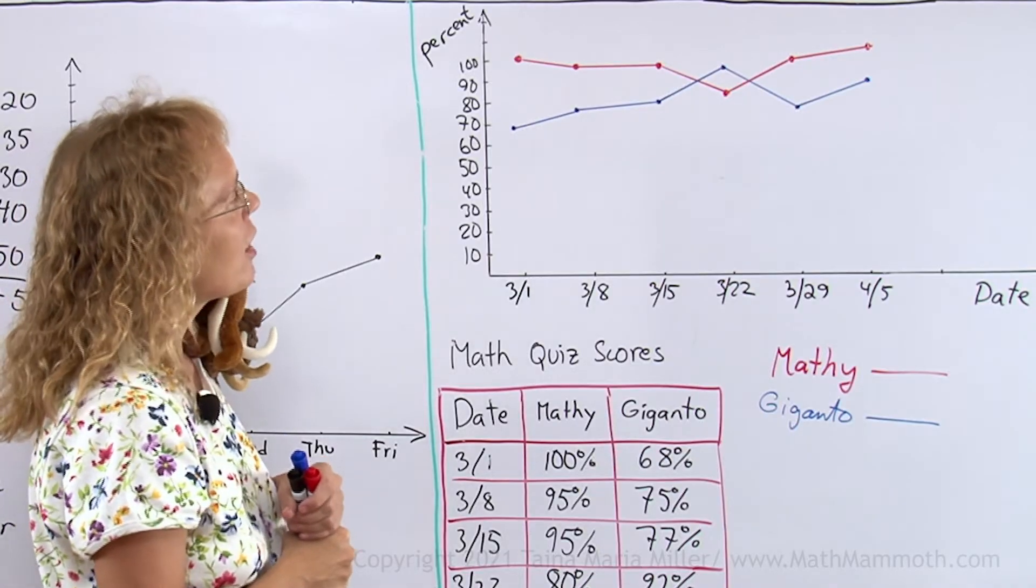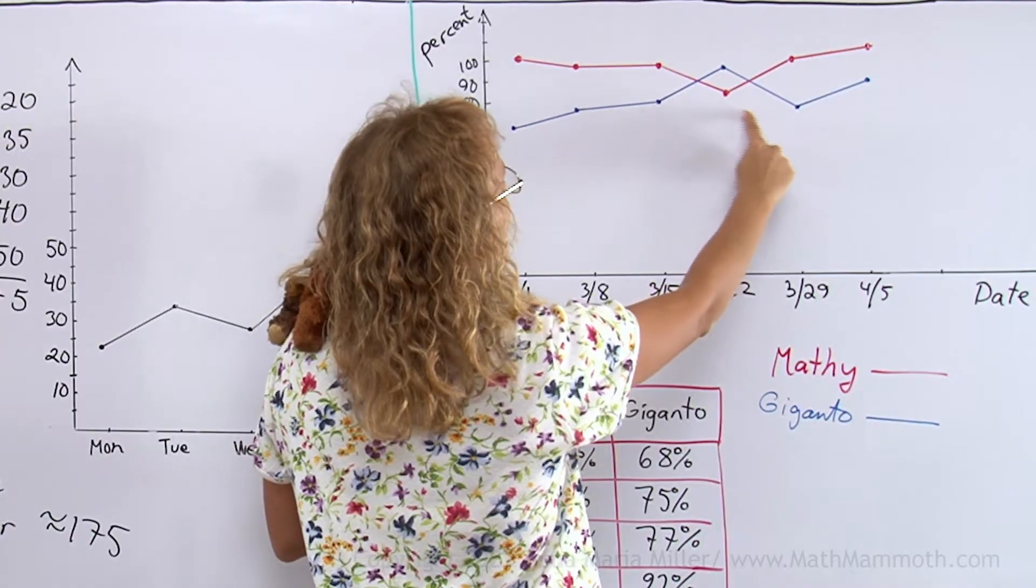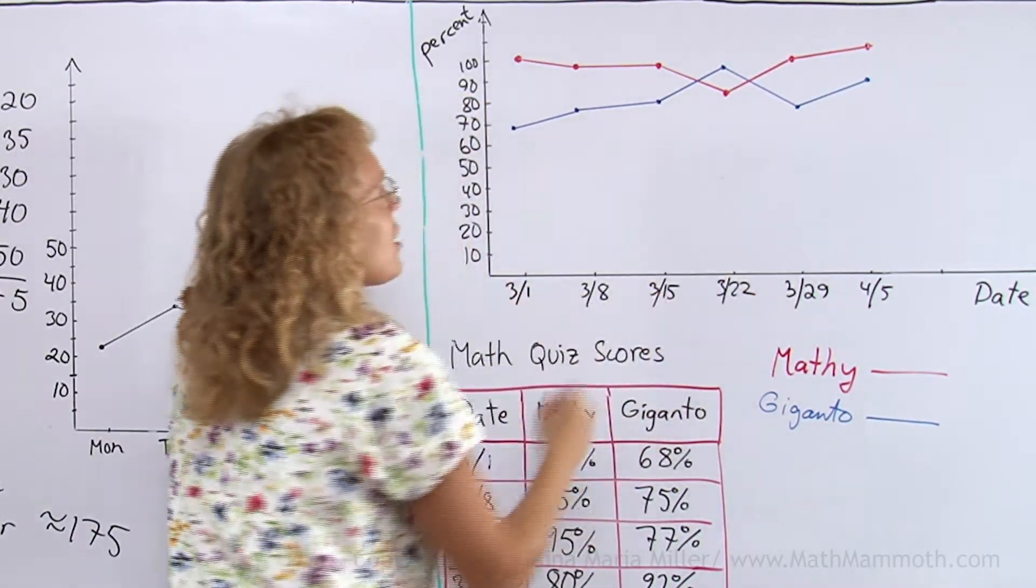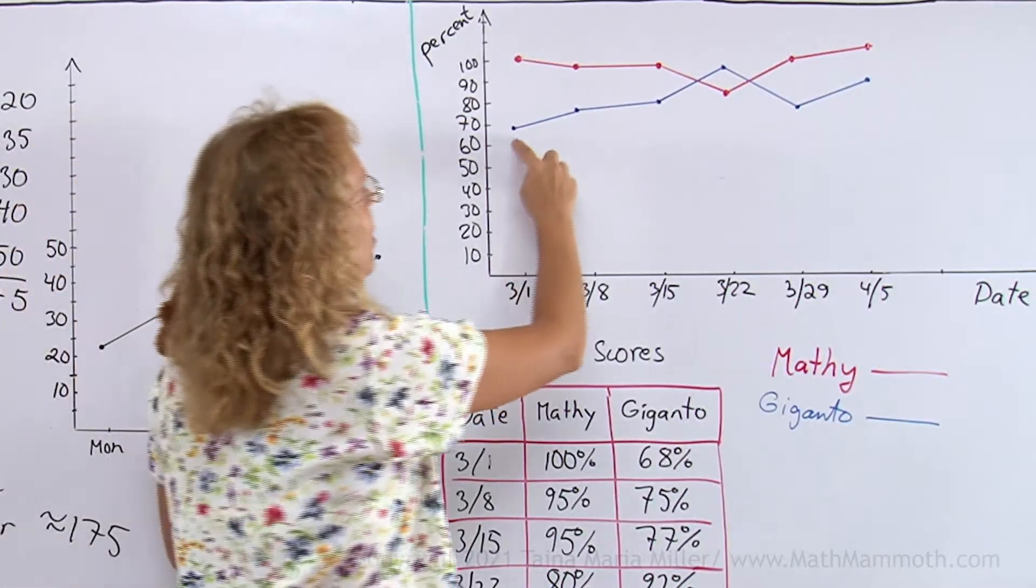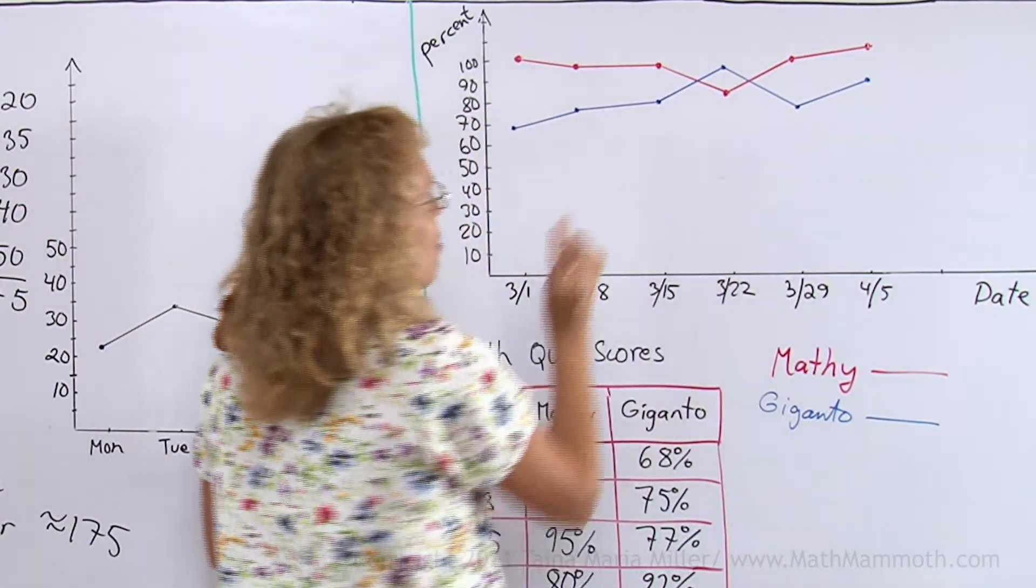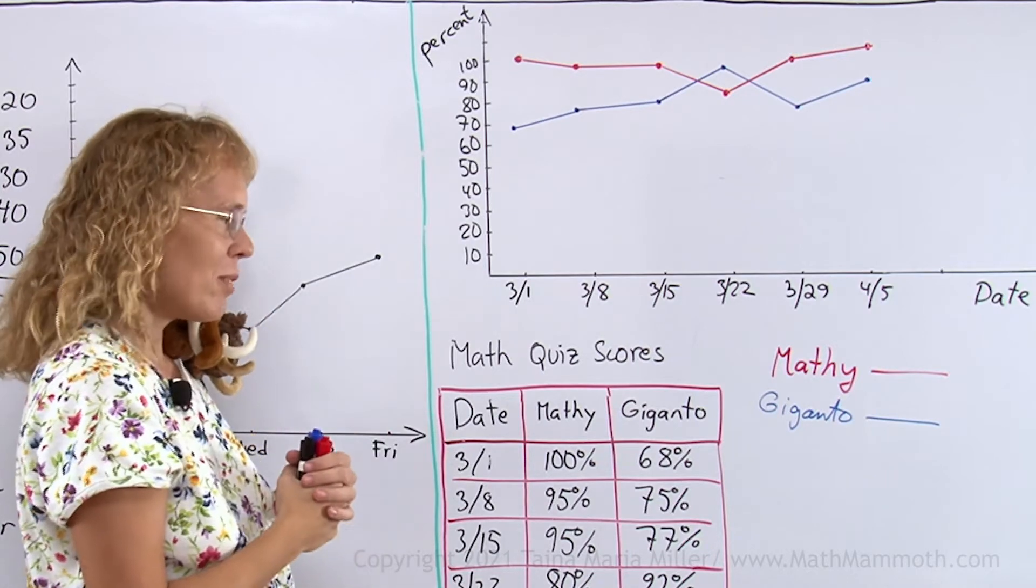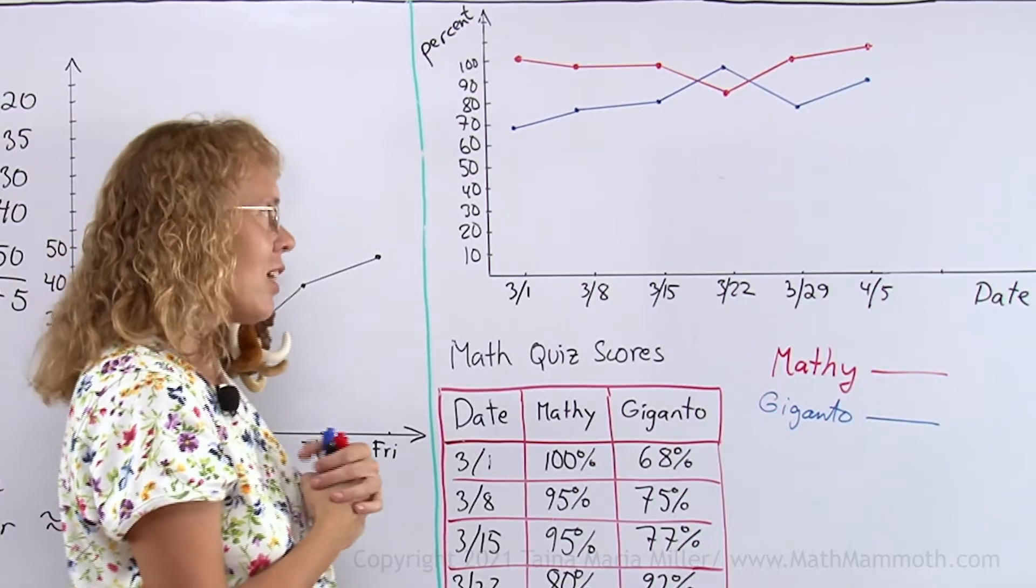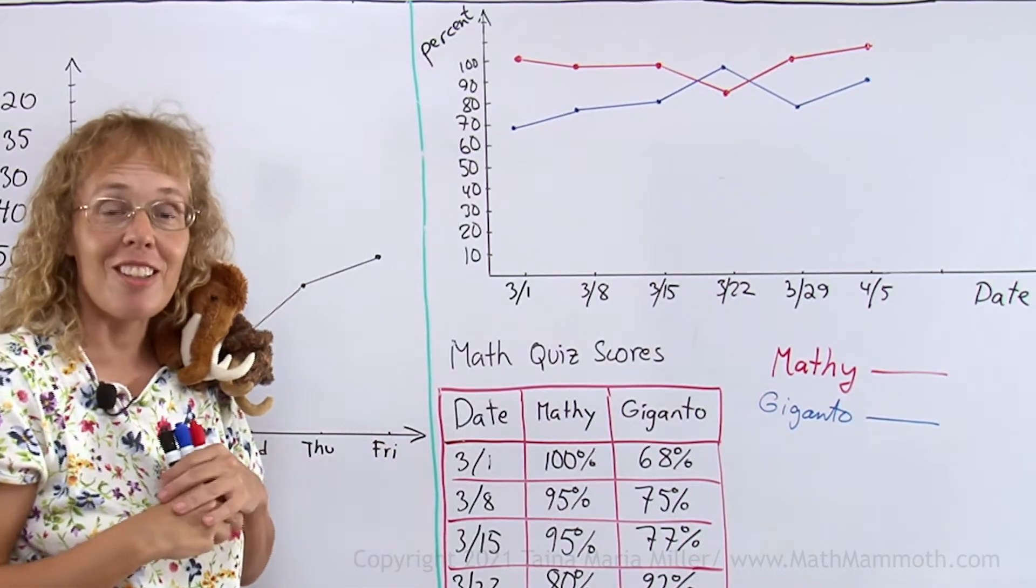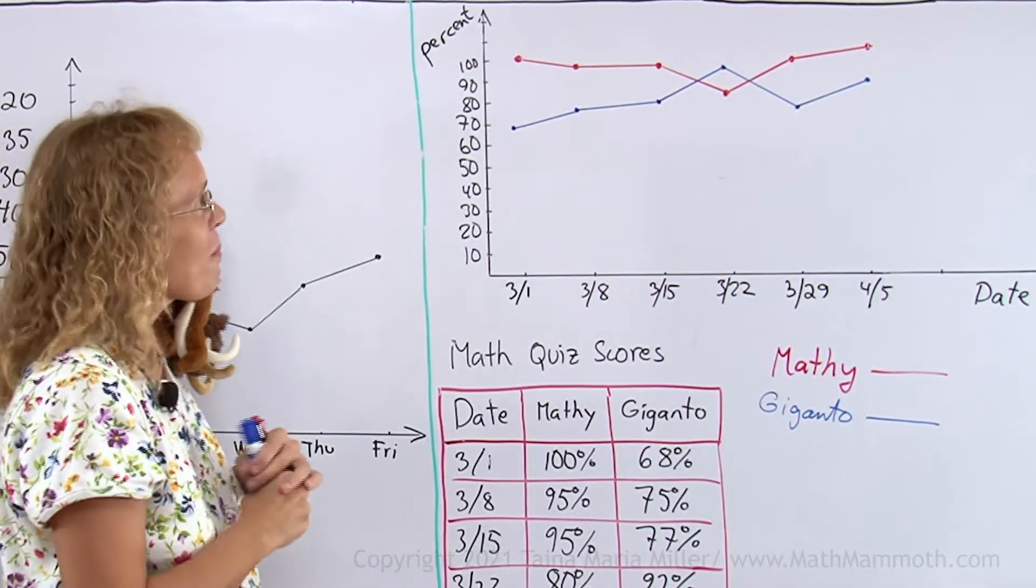Now, Giganto's, on the other hand, seems to be on the upward trend, then goes kind of zig-zaggy, or you could think that, well, he seems to be improving maybe a little bit, except for that one test where he did really well, compared to his normal. What happened that time, Giganto? He said he studied really hard, he knew it was kind of an easy test, so he tried to really ace it.